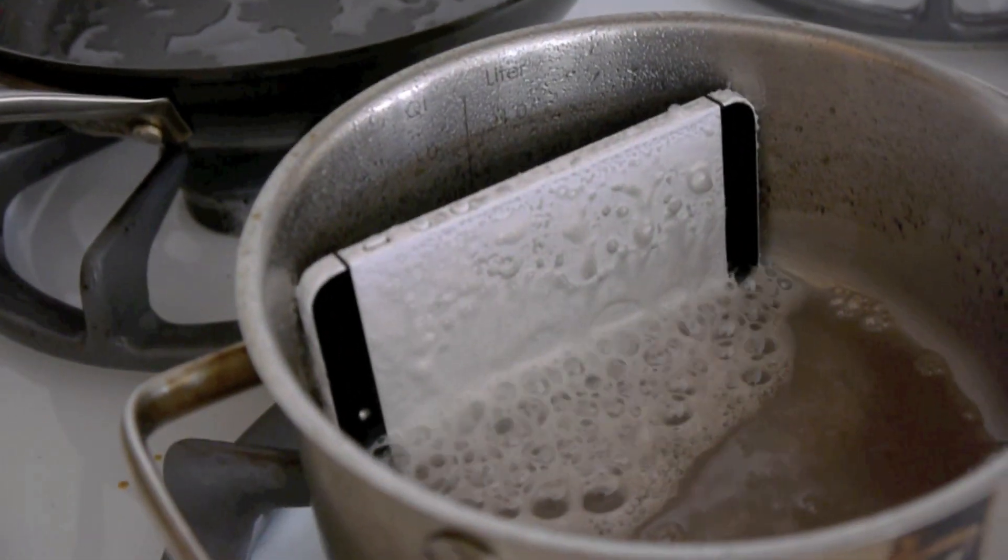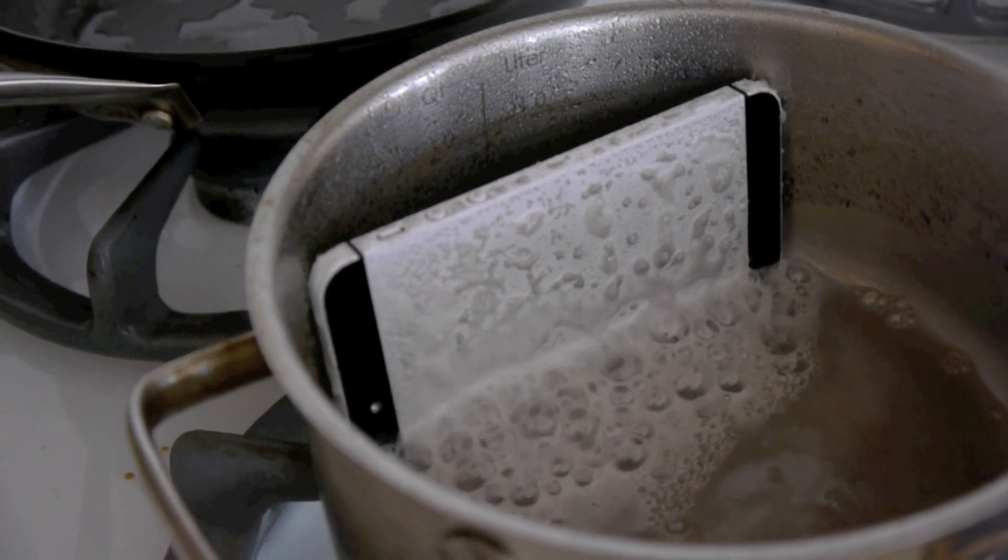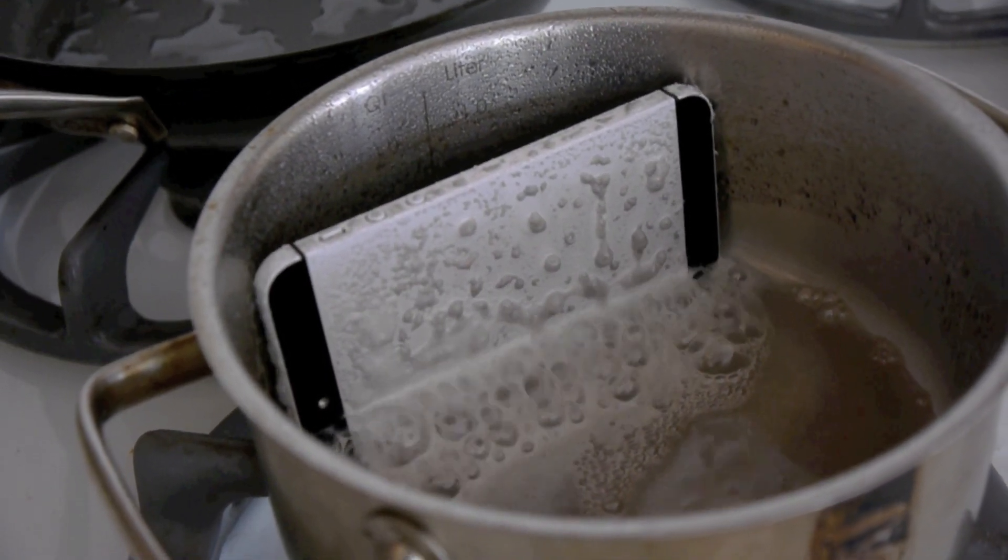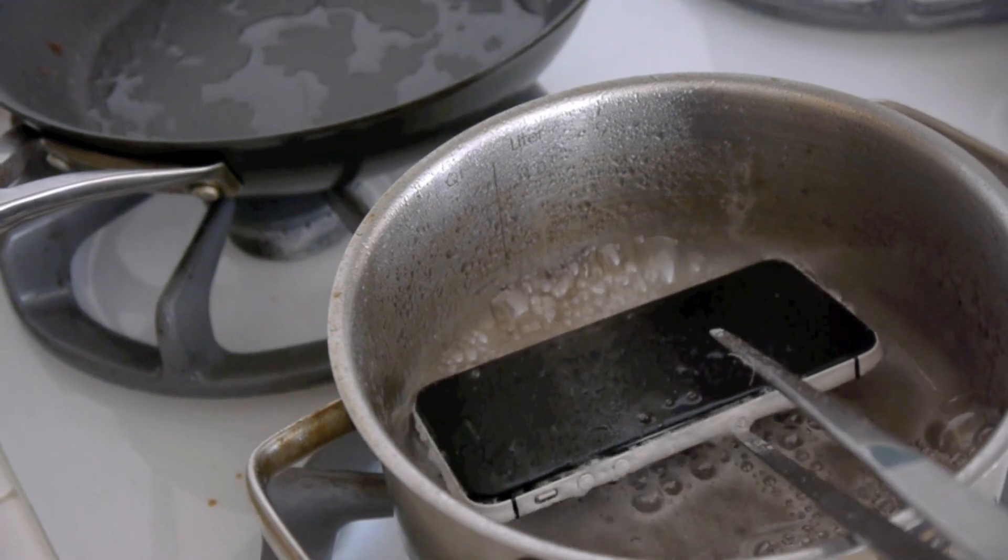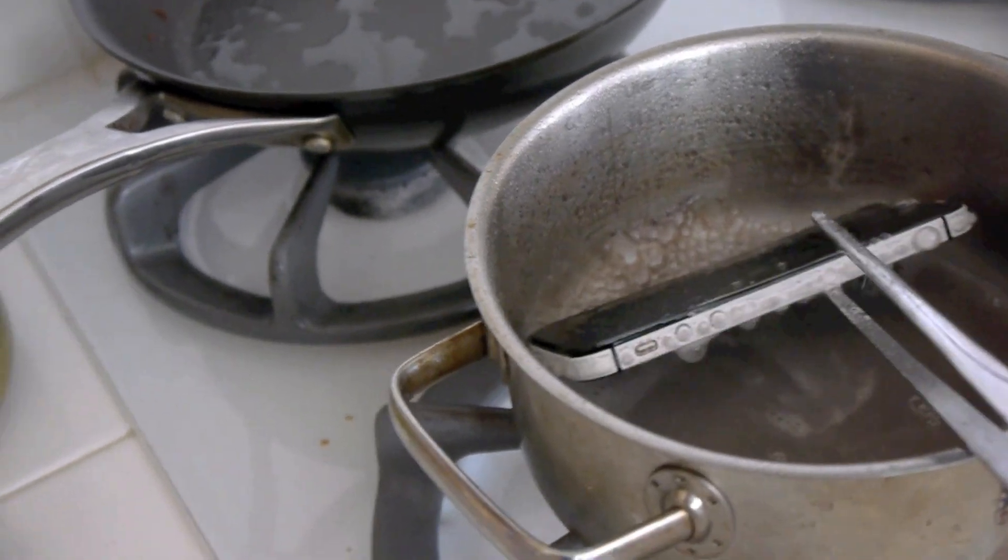After halfway through the experiment, I flipped over the iPhone to find that it was completely white, turned from black to white, almost a silver metallic color. At this point I knew I had to stop. I could have kept going but I was too worried. I'm doing this in my own kitchen.